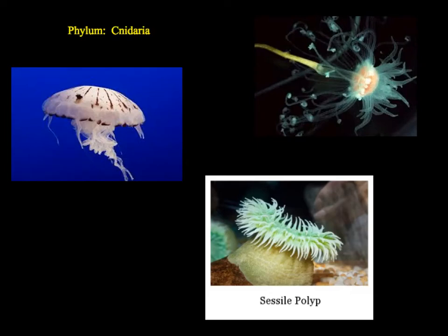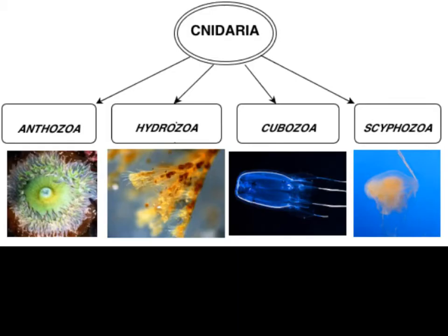Our next phylum in our journey through the invertebrates are the cnidarians, and we're moving up the evolutionary ladder here. These cnidarians include the jellyfish, the hydroids, and the sea anemones and corals. The fancy language for that would be hydrozoa for the hydroids, scyphozoa for the jellyfish, anthozoa for the corals and sea anemones, and then one other group, the cubozoa, which are the box jellies.